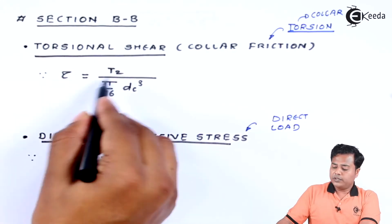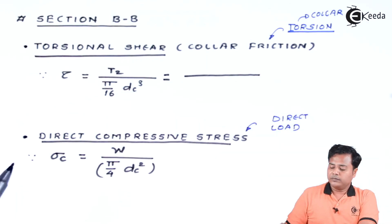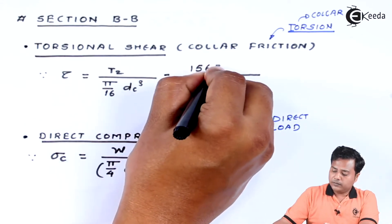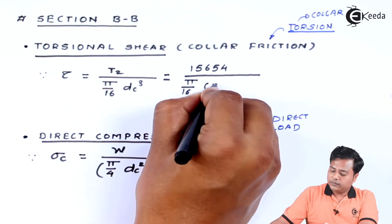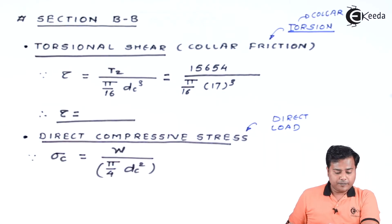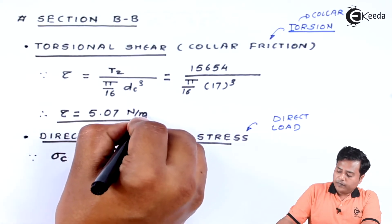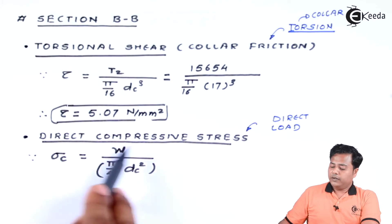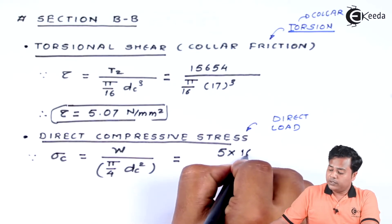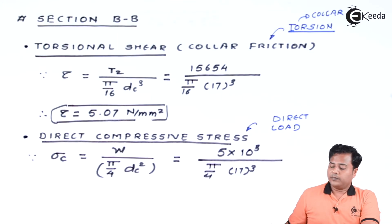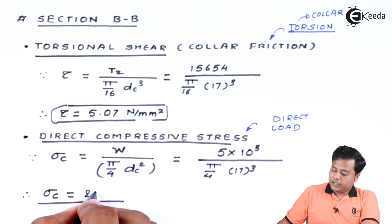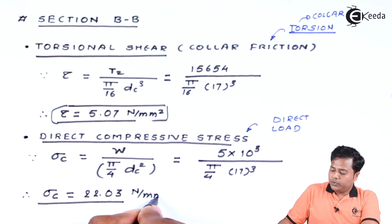Let's substitute the values. The expressions are quite simple. The value of T2 we had found out was somewhere around this value. As we evaluate this, we will get 8.63 N/mm², which is our first finding. For direct compressive stress again, we know that the direct load which is going to act is 5 kilonewton. Again, as we evaluate this expression we will get somewhere around 22.03 newton per millimeter square.